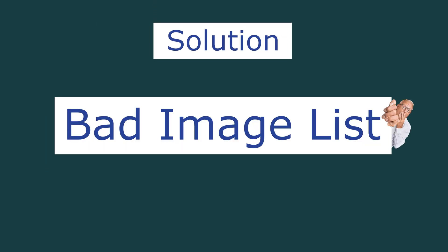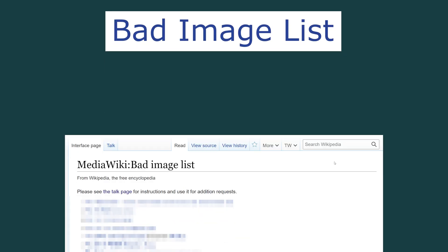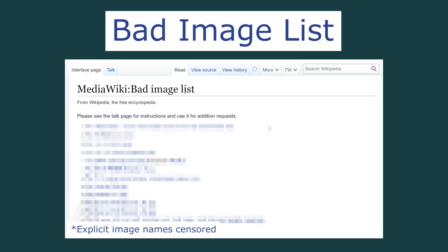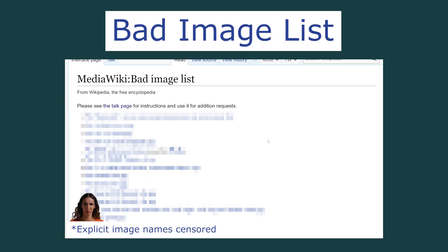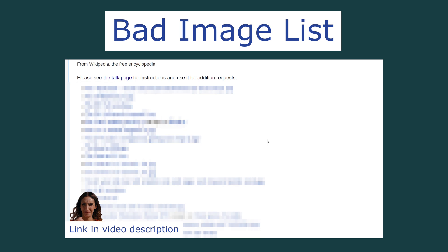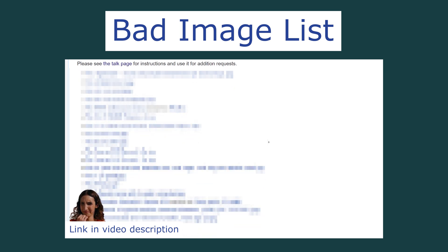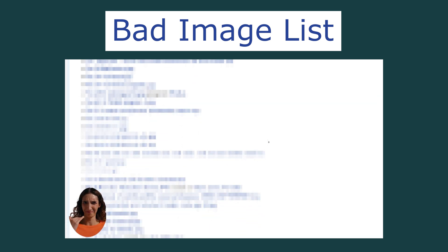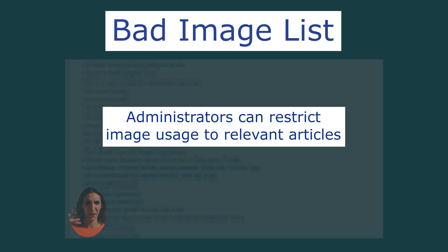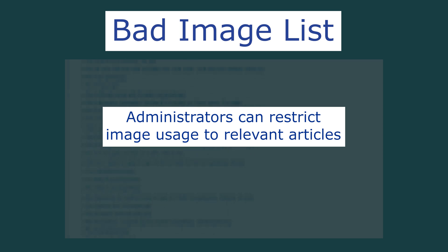The solution to image vandalism is this: the Bad Image List. I can't actually show you the images on this list, but if you go to this page, viewer discretion is advised. This page allows Wikipedia administrators to restrict the usage of troublesome images and limit them to specific and relevant Wikipedia pages.